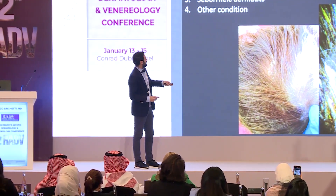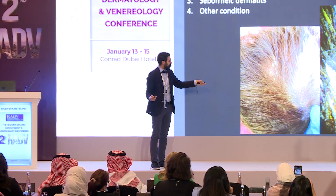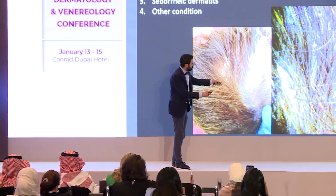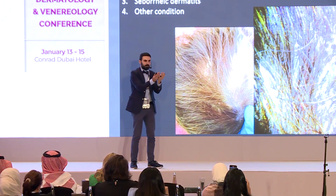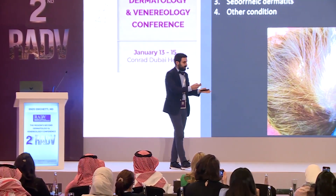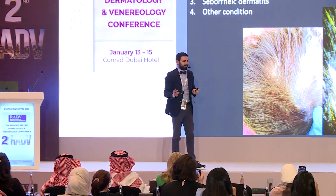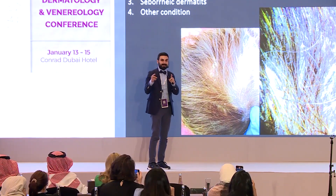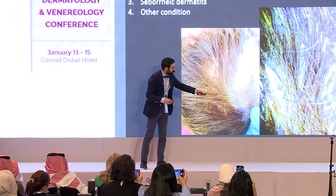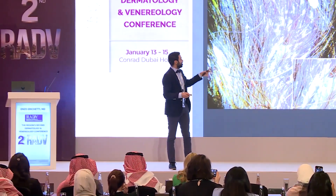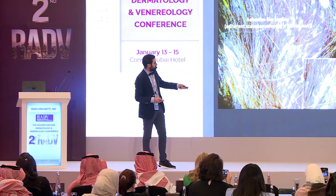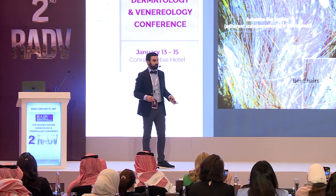Another case: psoriasis, tinea capitis, seborrheic dermatitis, or other condition? It's yellow, but let's see the scaling pattern — we have thick scaling enveloping a tuft of hair, so it looks like pityriasis amiantacea. But it's not pityriasis amiantacea — it's tinea capitis. Tinea capitis may present like pityriasis amiantacea. But look here: this bent, comma-like hair — so this is tinea capitis. In both cases we have thick scaling enveloping a tuft of hair, but on one side we have the bent hair. We have to focus very carefully on the patient.